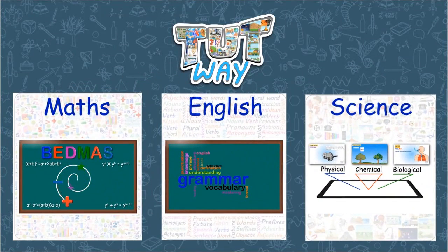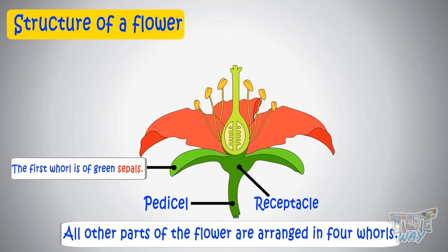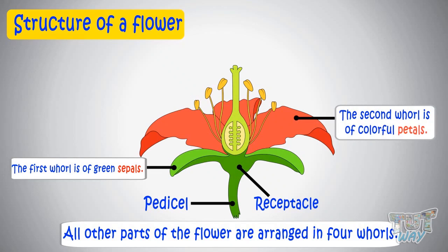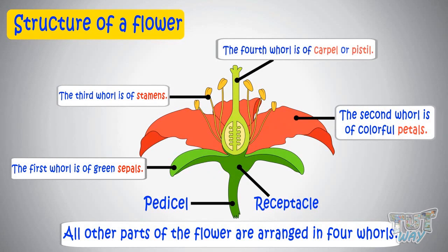The first whorl is of green sepals. The second is colorful petals. The third is stamens, which is the male reproductive part. The fourth is carpel or pistil, which is the female reproductive part.